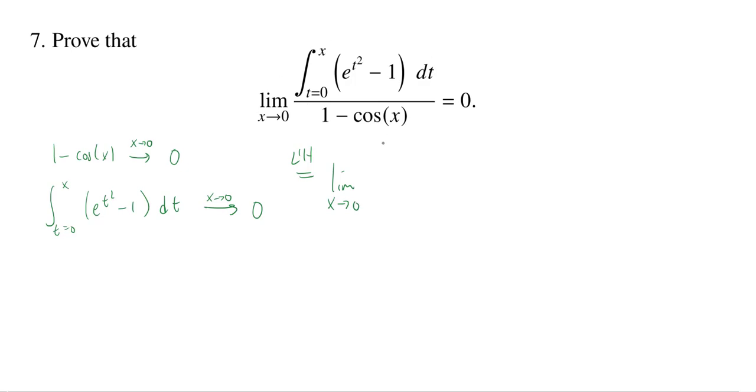I take the derivative top and bottom, the derivative with respect to x. On the bottom, I'm also taking the derivative, but this should be pretty easy. The derivative of 1 is 0, and the derivative of negative cosine is sine.